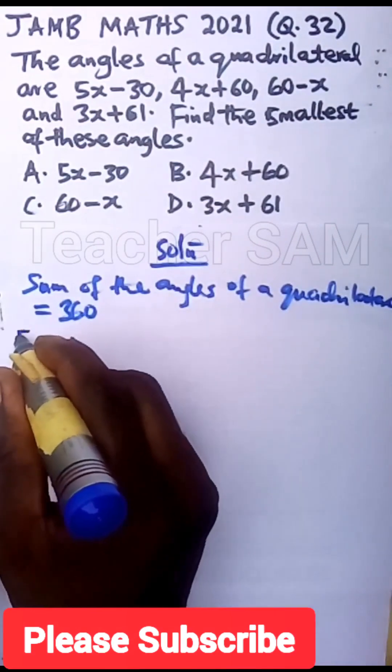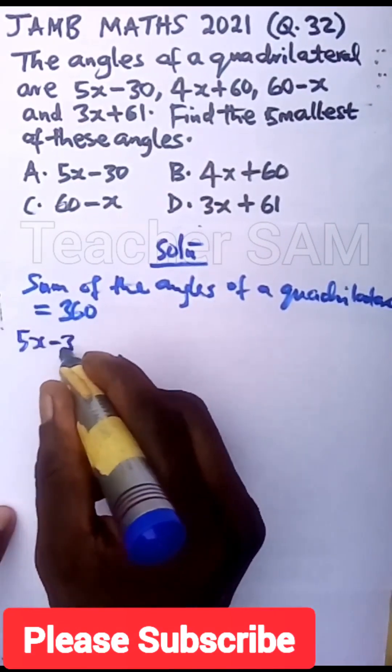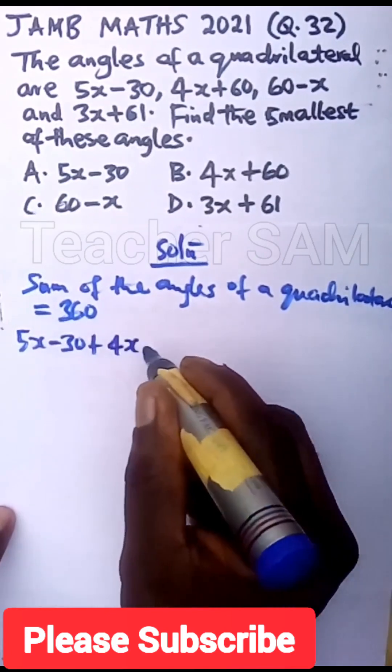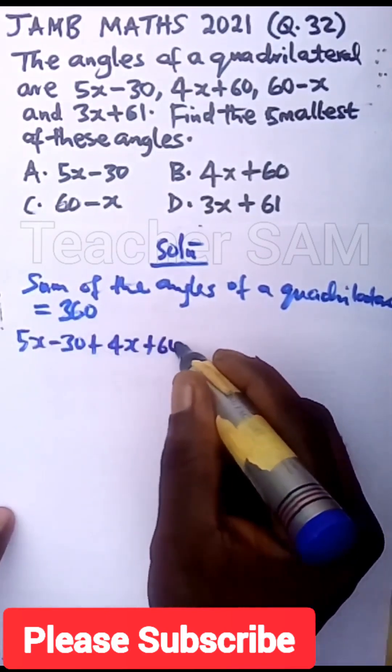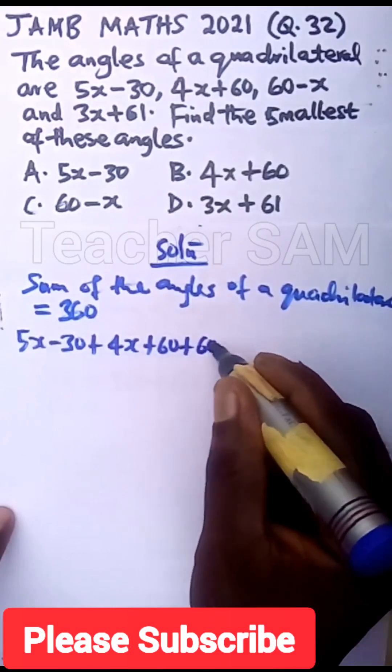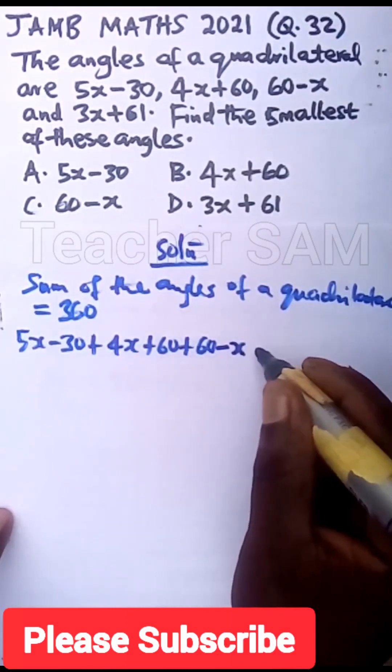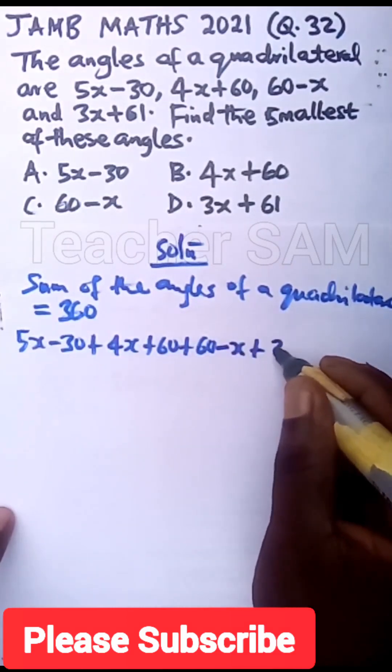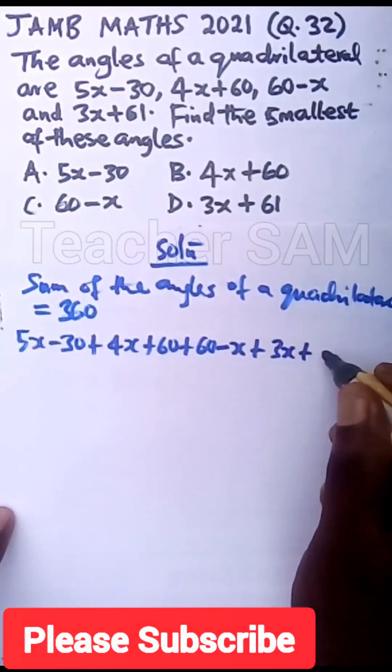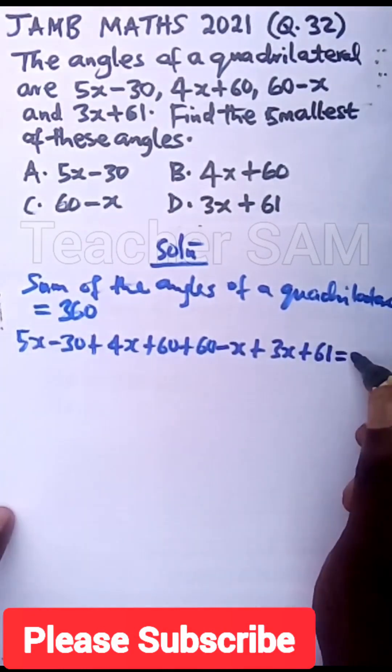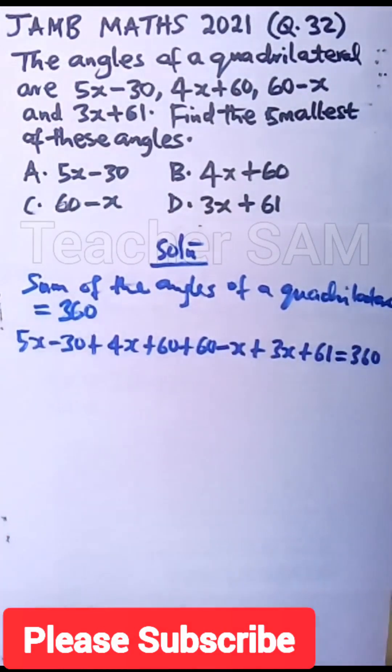So that is 5x minus 30 plus 4x plus 60 plus 60 minus x plus 3x plus 61. That will give us 360 degrees. So we have sum of that gives us 360.